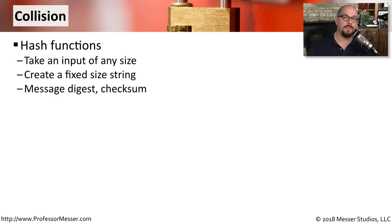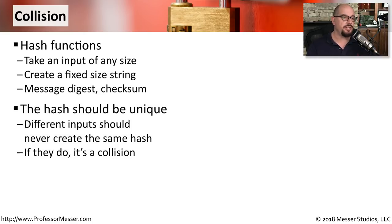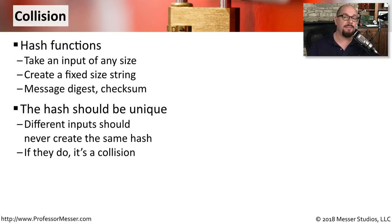This hashing method can be used with any type of message — it could be a large graphics file, a disk image, or a sentence like the one used in the previous example. We use that hashing algorithm to create a fixed-size string, which is our message digest. This message digest should be unique: if we have two different kinds of input, they should never create exactly the same hash. If that does occur, it's a collision.